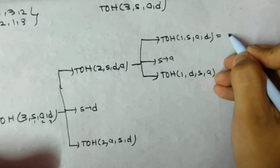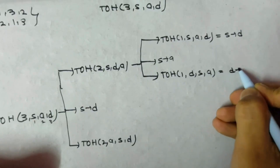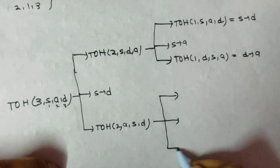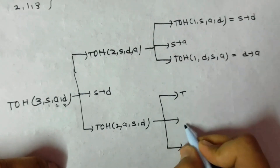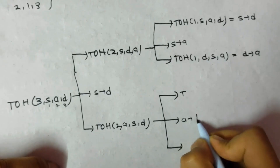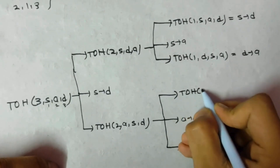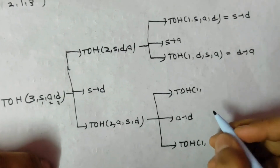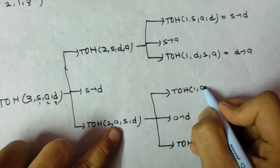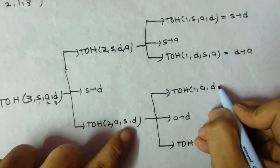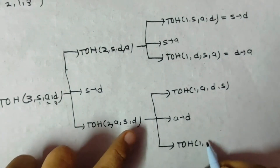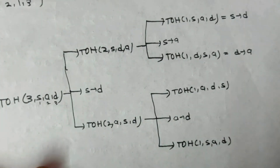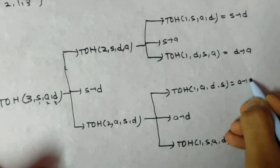Whenever you reach n equals 1, just write the first peg to the last peg directly. For the D-to-A node, do the same thing: middle is first to last, then in the above portion decrease one and follow sequence 1-3-2, and below follow 2-1-3.